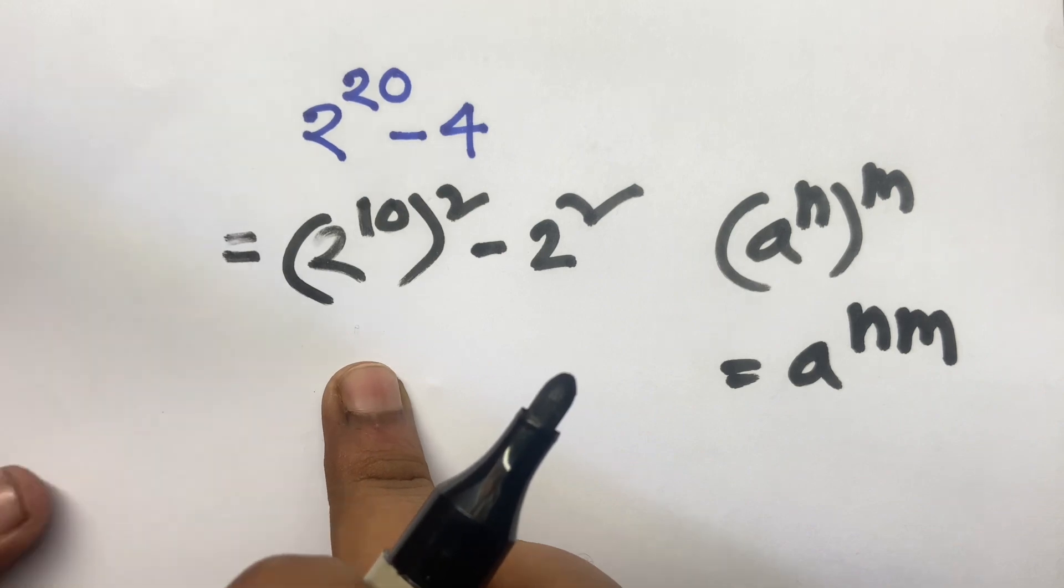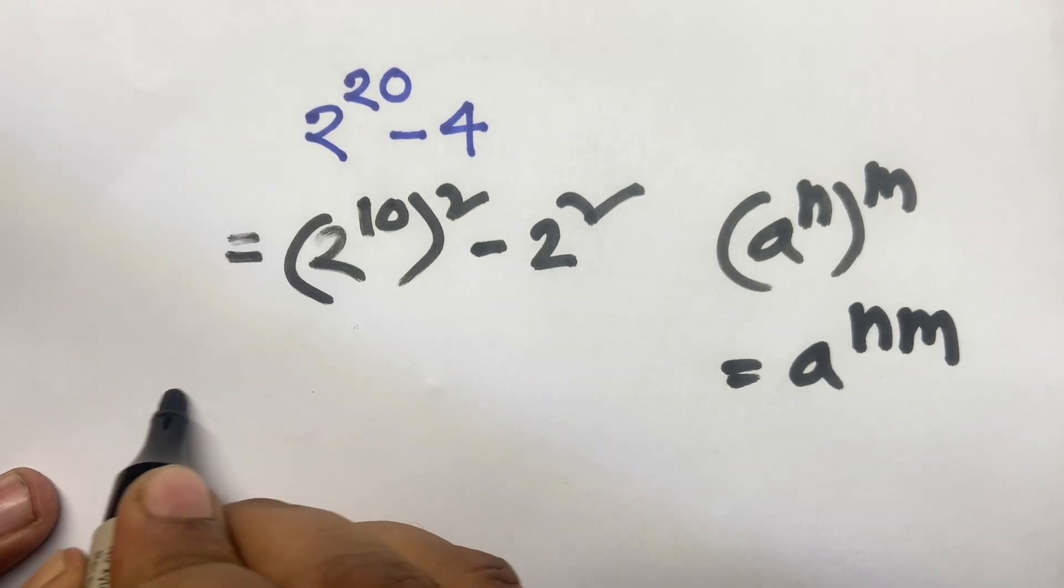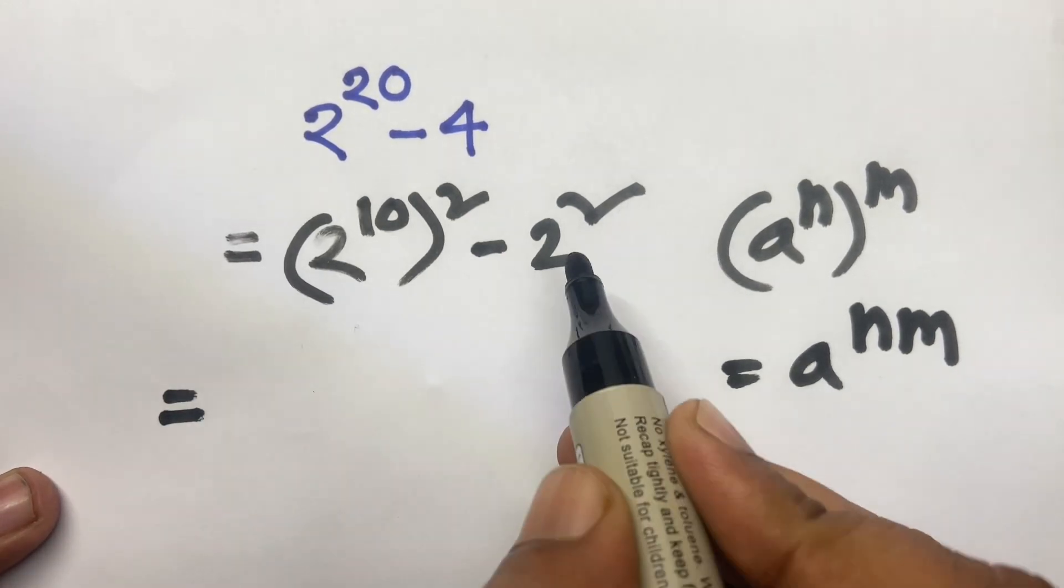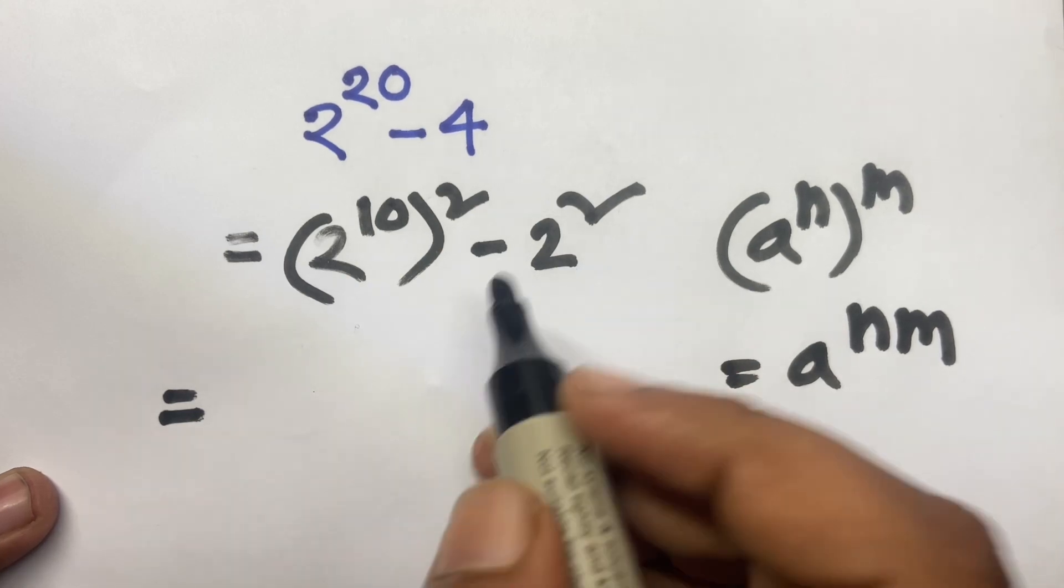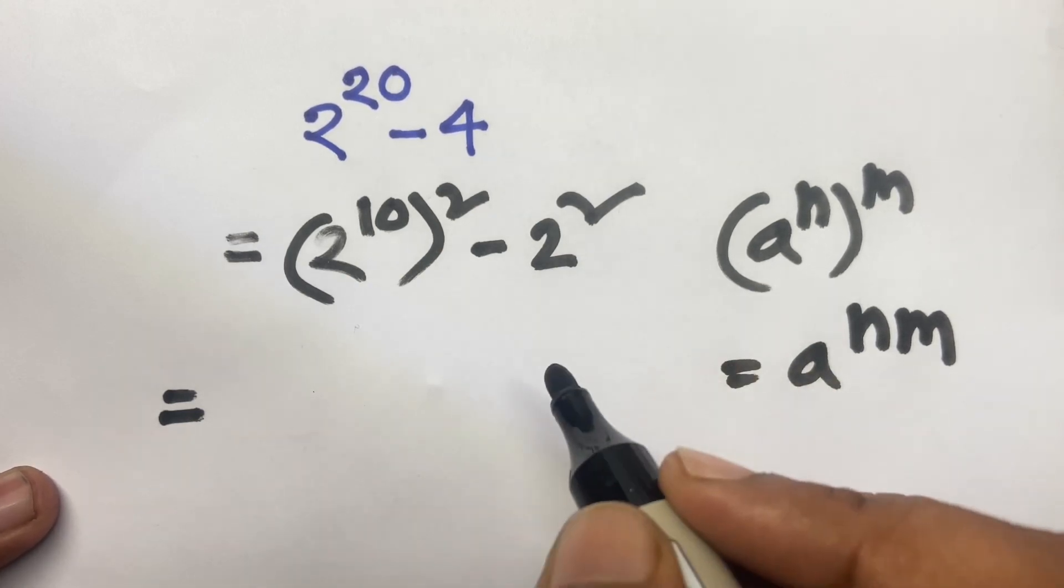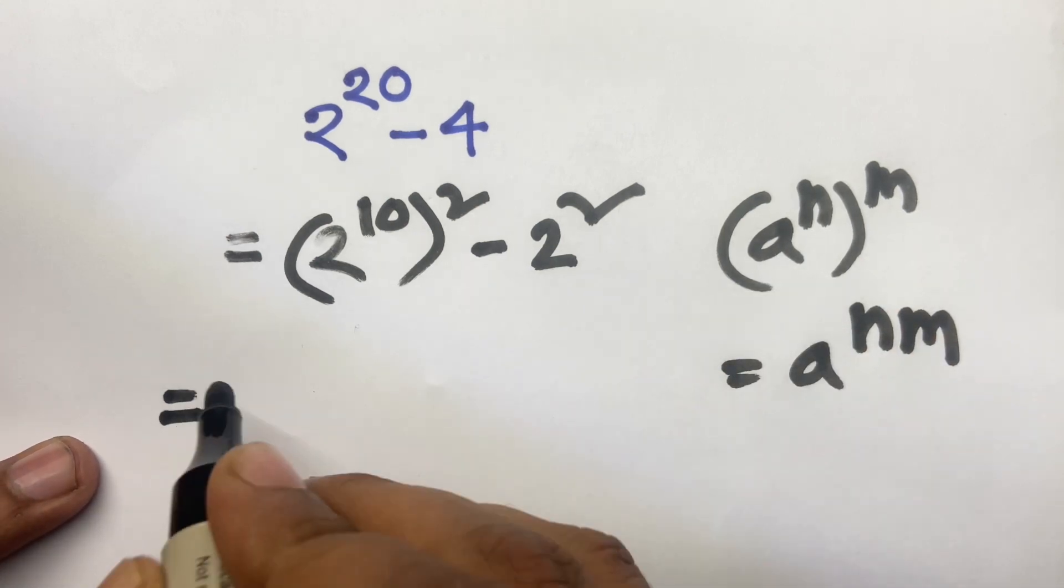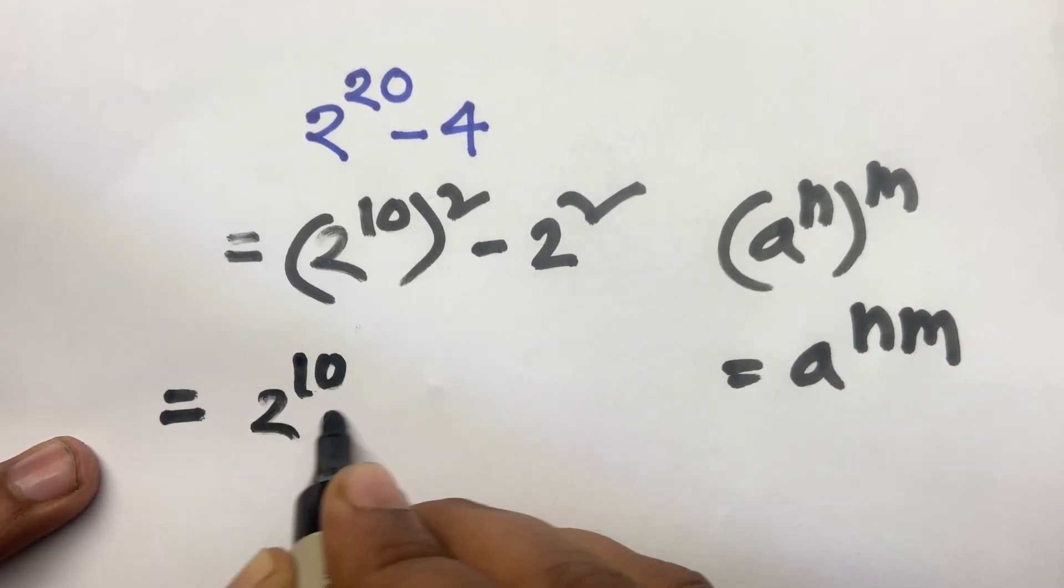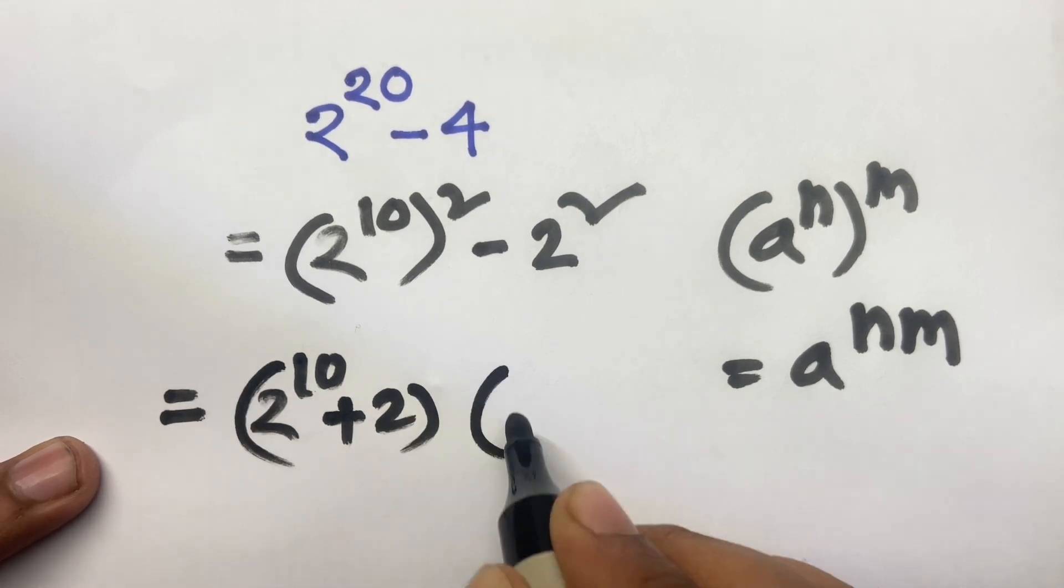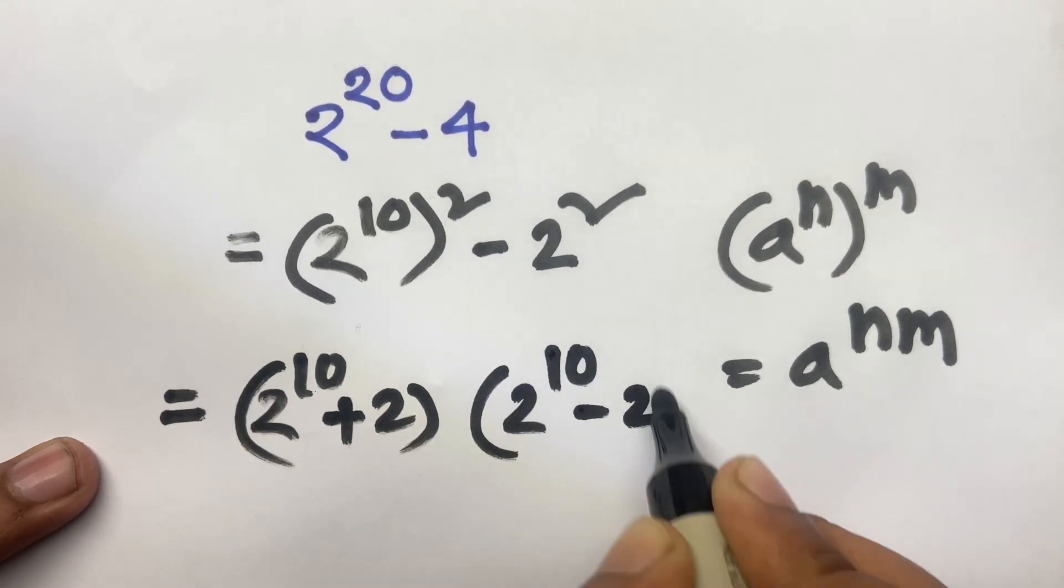Now I can say if you think it is a, it is b. We know that a squared minus b squared equal to a plus b times a minus b. I follow this formula in this line. Now I can say 2 to the power 10 plus 2, 2 to the power 10 minus 2.